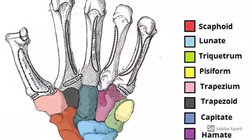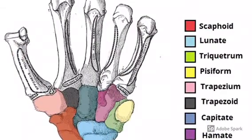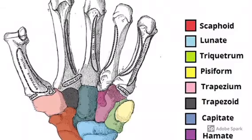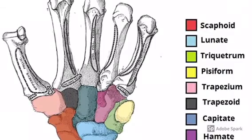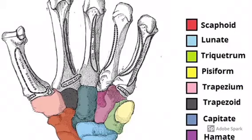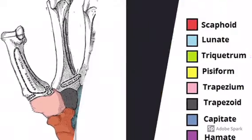These are the carpal bones, otherwise known as your wrist bones: scaphoid, lunate, triquetrum, pisiform, trapezium, trapezoid, capitate, and hamate.